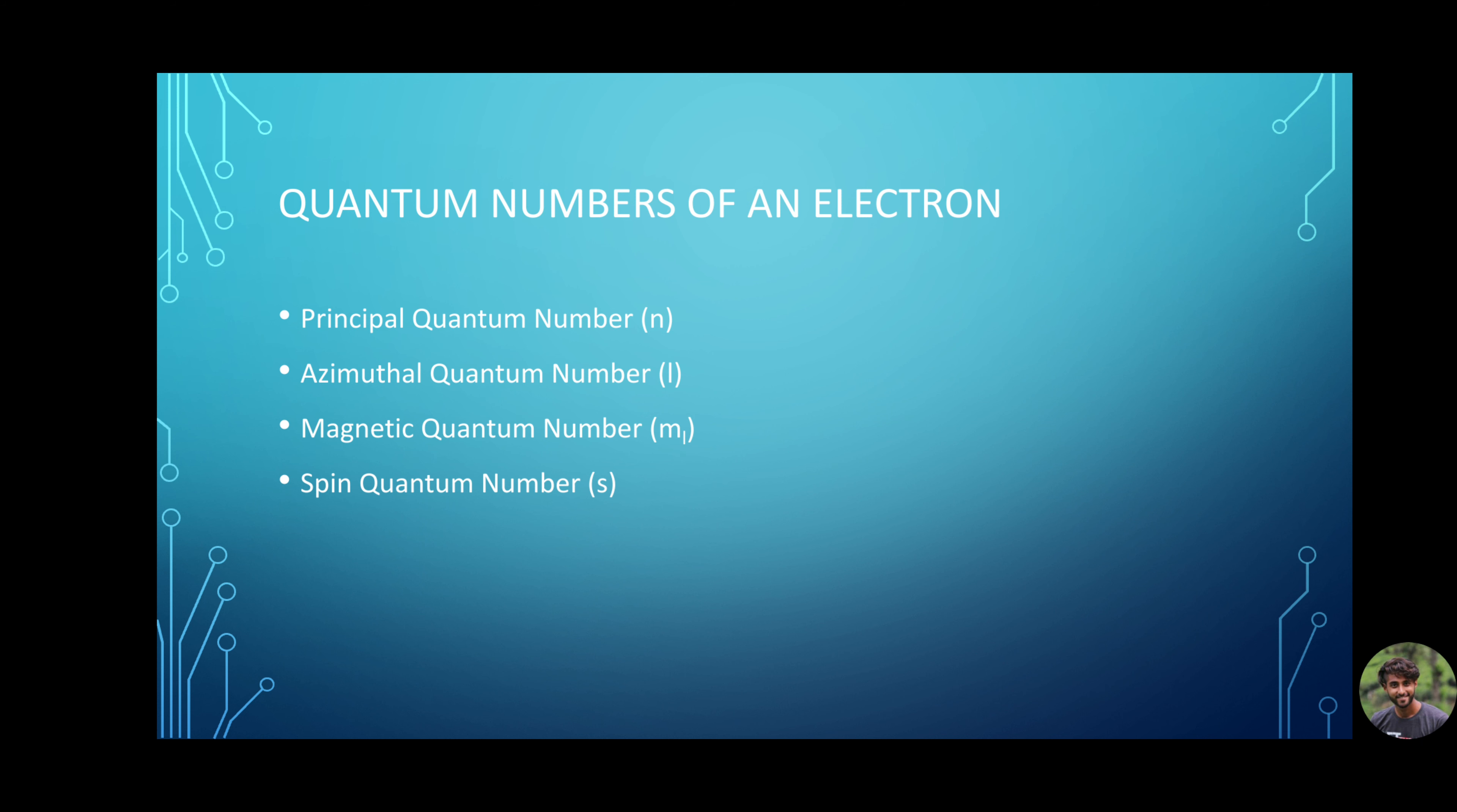An electron in an atom can be completely described by four quantum numbers. Principal quantum number lowercase n, azimuthal quantum number lowercase l, magnetic quantum number lowercase m_l, and spin quantum number lowercase m_s. Please note that a quantum description of a molecular orbital requires different quantum numbers, but more of it later.